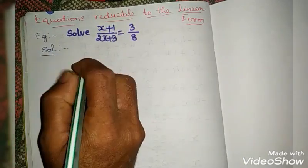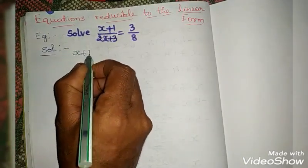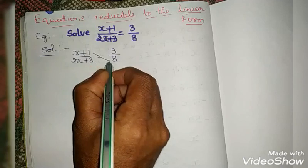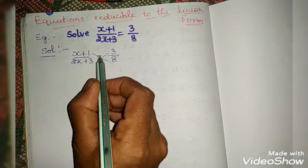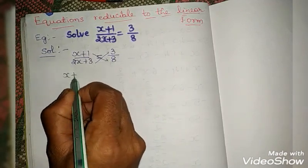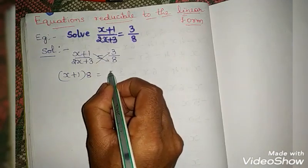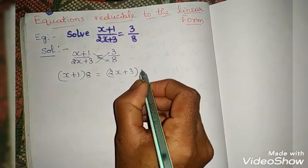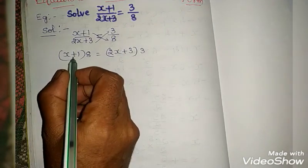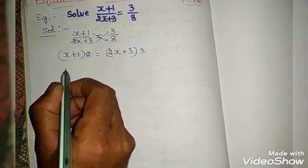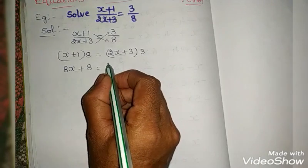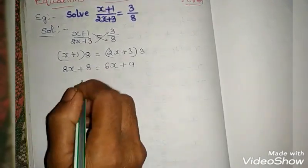Let us try to solve it. First of all, what we have to do is cross multiply. If there is an equal sign in the middle we have to cross multiply. So x plus 1 into 8 is equal to 2x plus 3 into 3. Now removing brackets: x multiplied by 8 gives 8x, plus 1 times 8 gives 8. On the right side: 2x into 3 gives 6x, plus 3 into 3 gives 9.